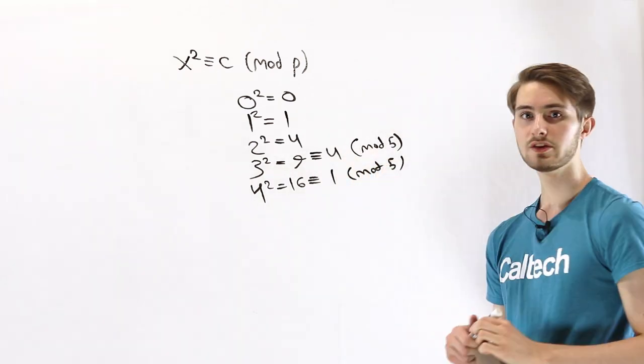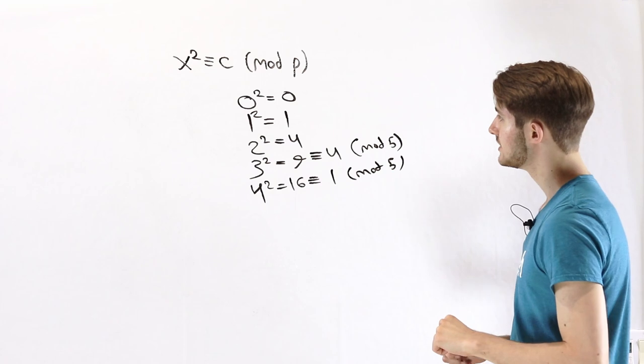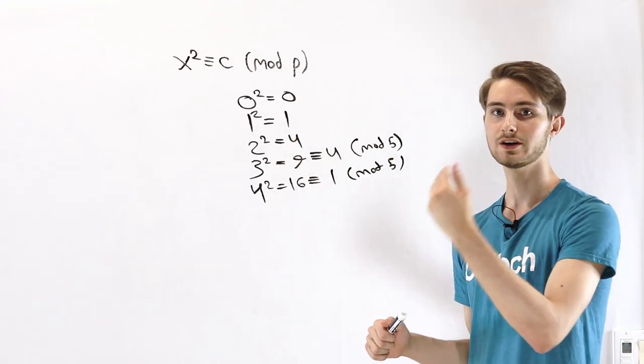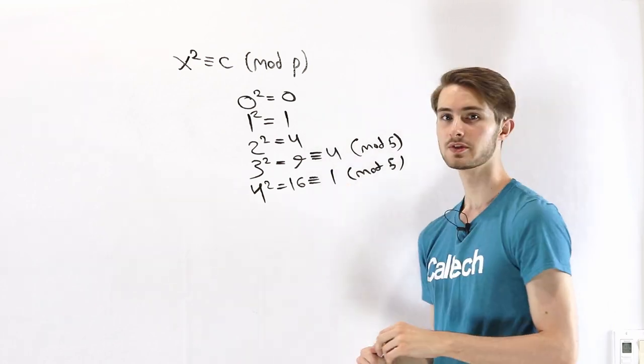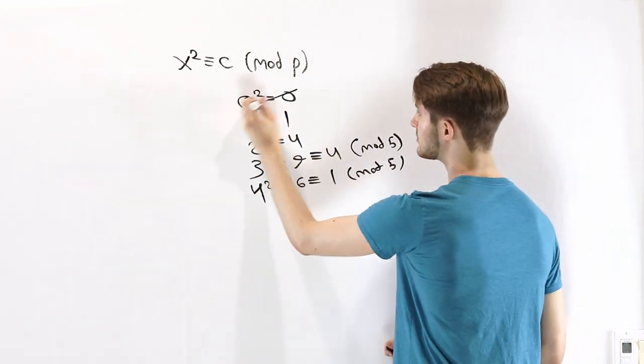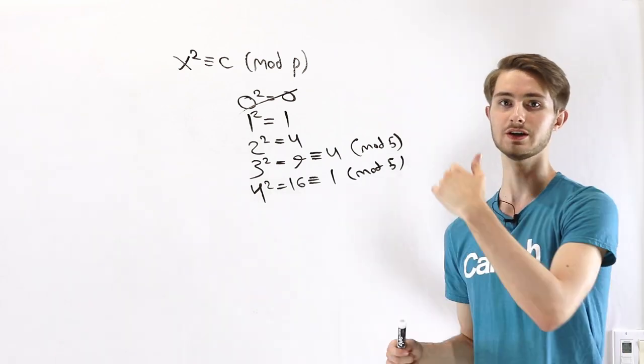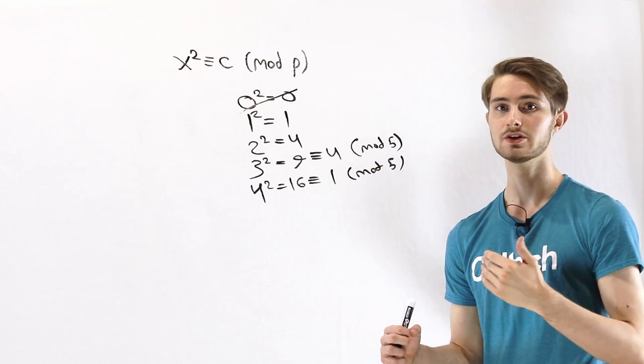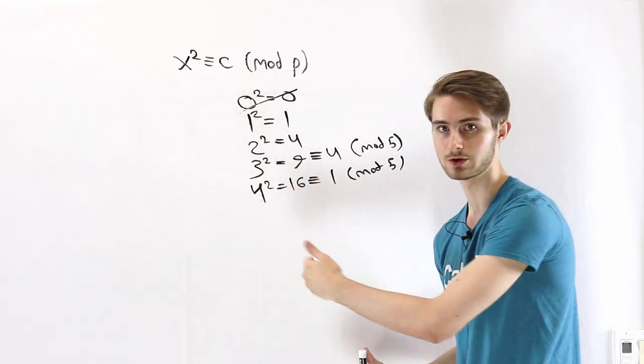One thing I'll note with quadratic residues is we do see that 0 ends up being the square of some number mod 5. But we often don't count 0 as a quadratic residue because it's a quadratic residue of everything, but also it often doesn't work with theorems that apply to any other quadratic residue.